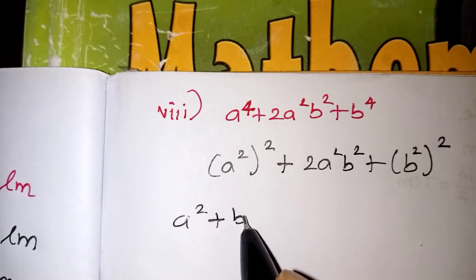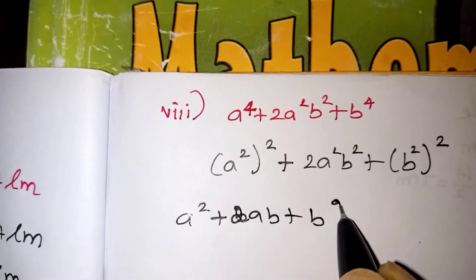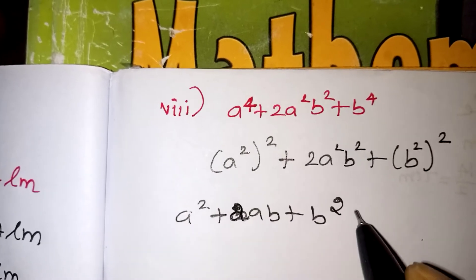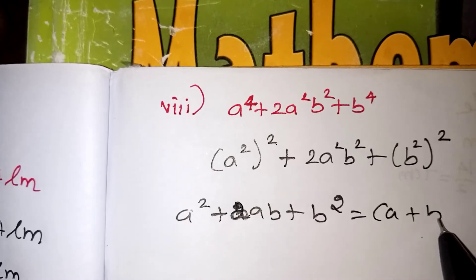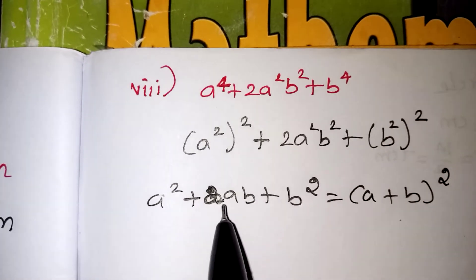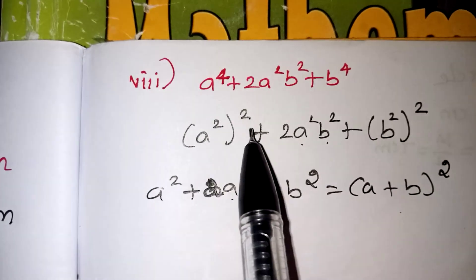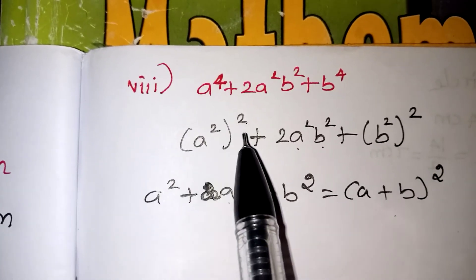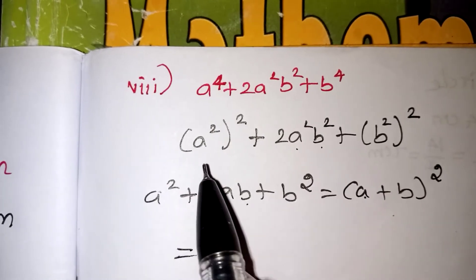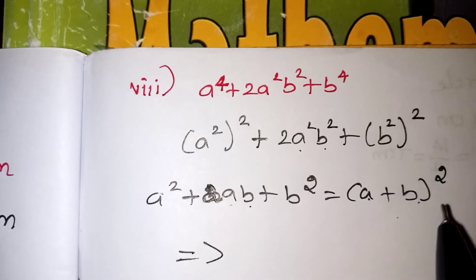Now this looks like a squared plus 2ab plus b squared, which is the formula of a plus b the whole squared. Here, in place of a and b, we are getting a squared and b squared respectively. The a squared the whole squared means a value in this question is a squared, and for b the value is b squared.